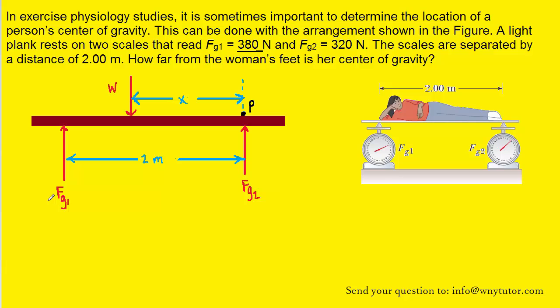Perhaps less obvious are the forces that we've labeled F sub G1 and F sub G2. F sub G1 is the reading on the scale. And that reading comes about because the plank is pushing down on the scale. But if the plank pushes down on the scale, that means that the scale is pushing back up on the plank. That's actually an example of Newton's third law.